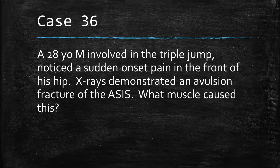A 28-year-old male involved in the triple jump noticed a sudden onset pain in the front of his hip. X-rays demonstrated an avulsion fracture of the ASIS. What muscle caused this?